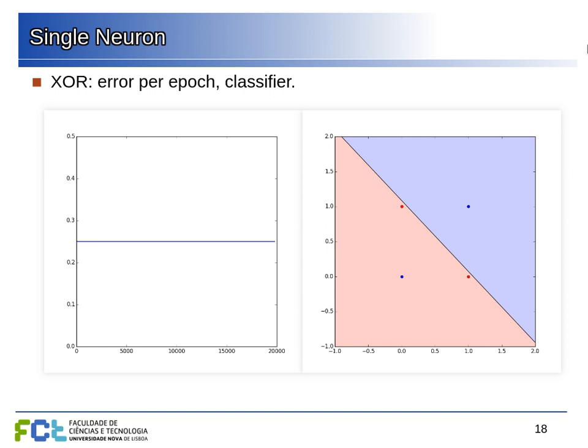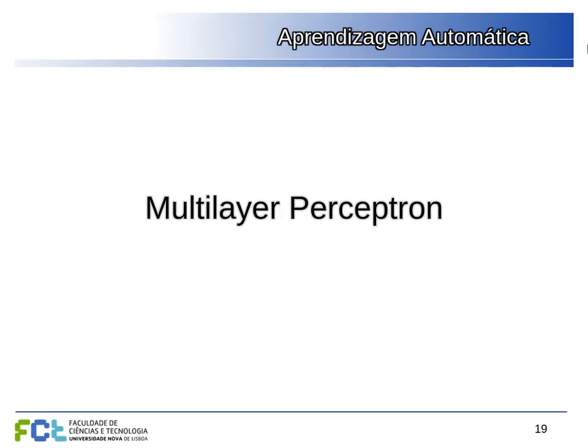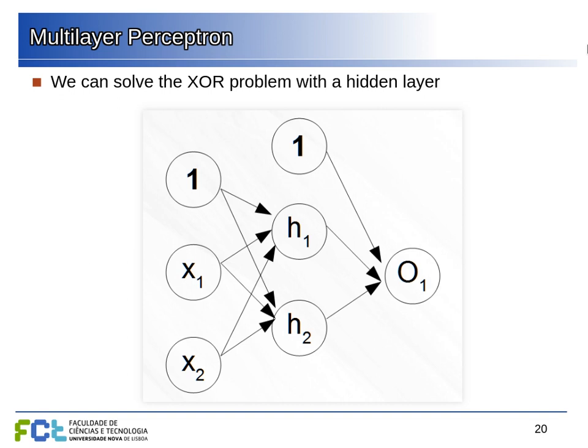This was the problem with the original perceptron. It seemed we had created intelligent machines, but all they can do is linear classification. No matter how many weights we use with one neuron, it's always a linear classifier like logistic regression. So now we go to the multi-layer perceptron — what we get when we stack layers of neurons that are fully connected to the following layers.